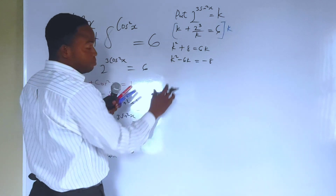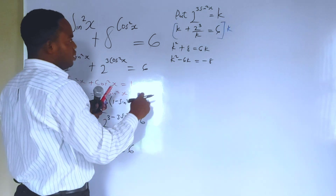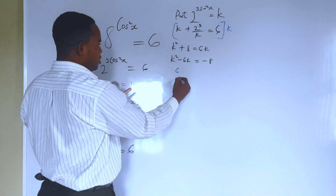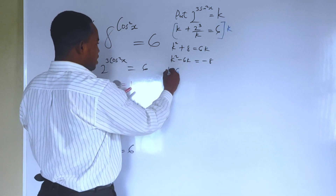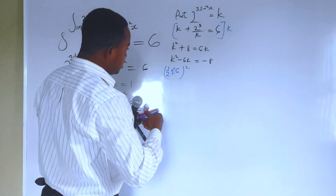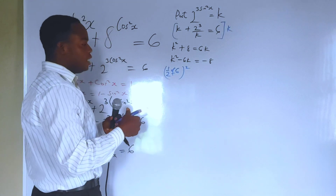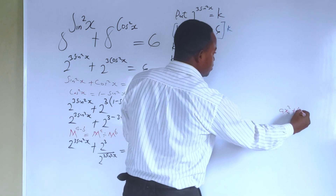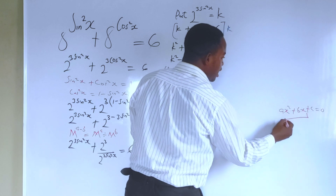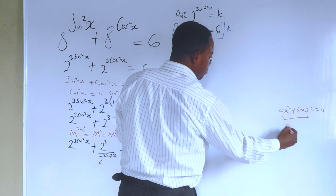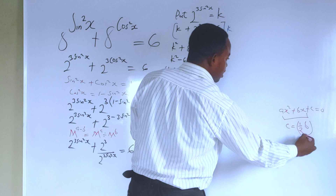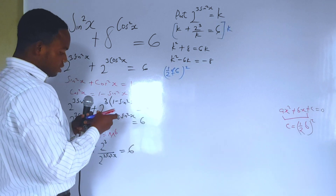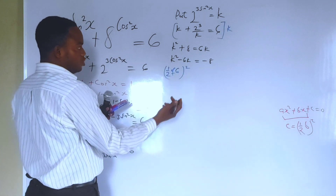The next thing is to add something to make this expression a perfect square. The tip is: take the coefficient of k, which is 6, halve it to get 3, and square it to get 9. That is what must be added to both sides. So we have k squared minus 6k plus 9 equals negative 8 plus 9.